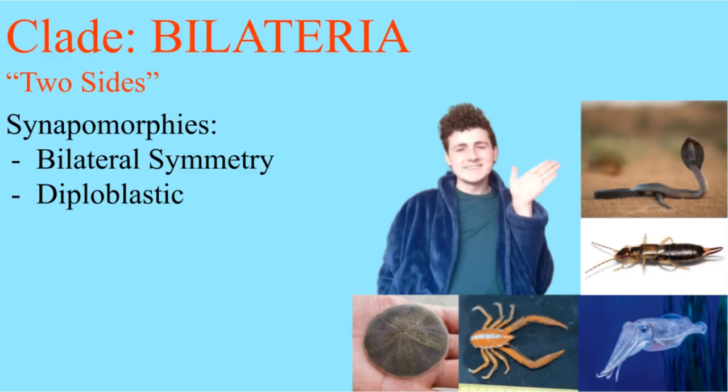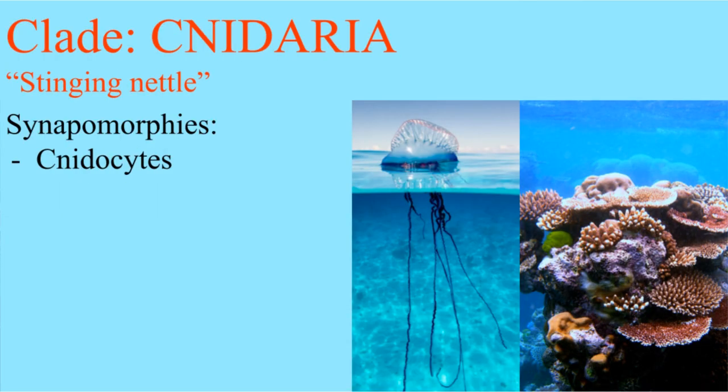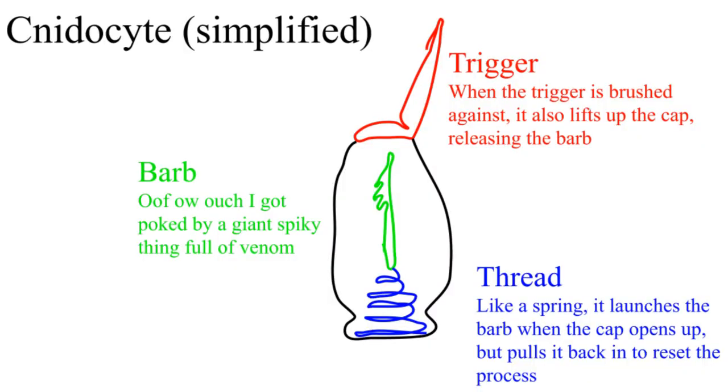The bilaterians are symmetrical at some point in their lives, and the cnidarians have this cool thing that launches out of their body and stabs into things. A lot of cnidarians are what's called colonial animals, which means that they're actually just a bunch of tiny animals all working together.